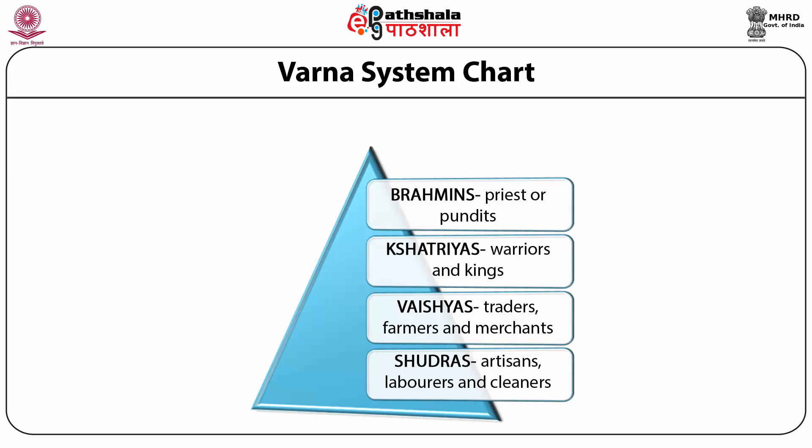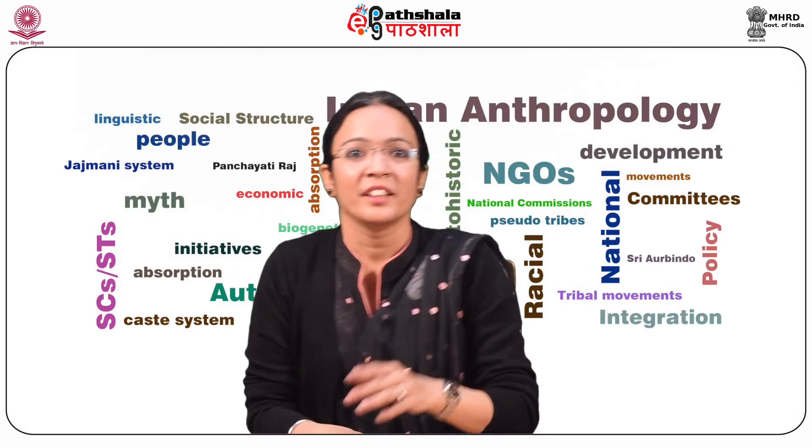Outside the proper Varna system, at the very bottom, are the untouchables — labeled thus by the British — because a high caste person had to go through an elaborate purification ritual after touching such a polluted person. Members of the three upper or highest Varnas are referred to as twice born, because they have gone through a ceremony entailing spiritual rebirth.